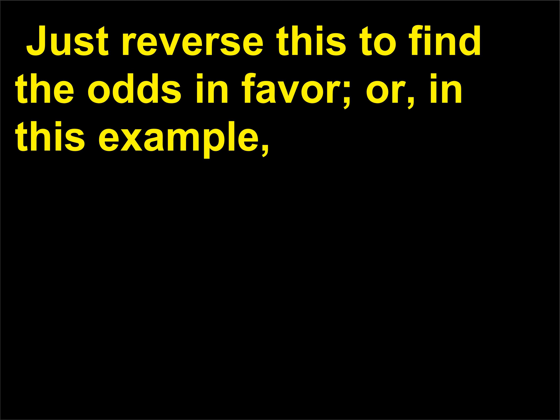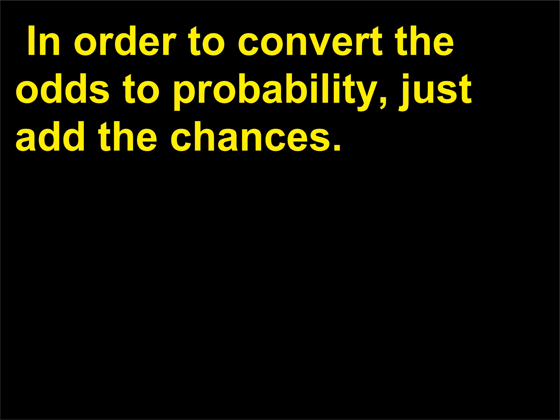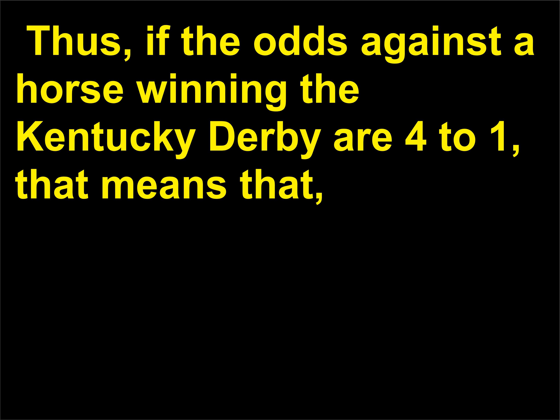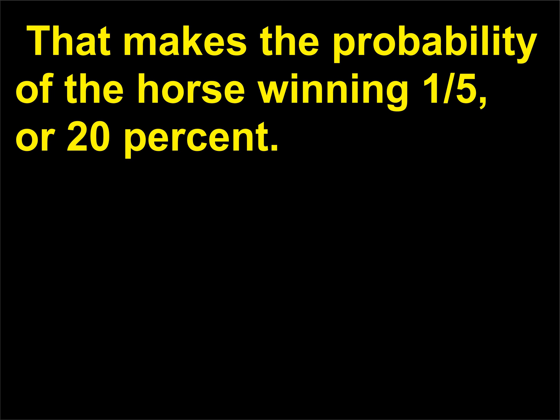Just reverse this to find the odds in favor — in this example, the odds would be 3 to 7 in favor of picking an apple. In order to convert odds to probability, just add the chances. Thus, if the odds against a horse winning the Kentucky Derby are 4 to 1, that means out of 5 total chances (4 plus 1), the horse has 1 chance of winning. That makes the probability of the horse winning 1/5, or 20 percent.